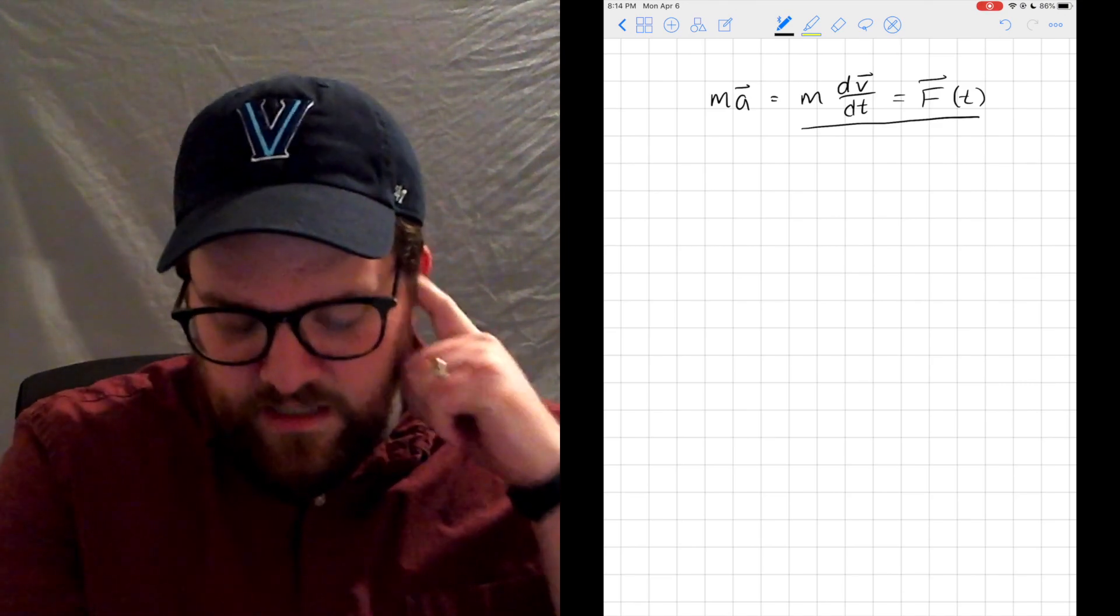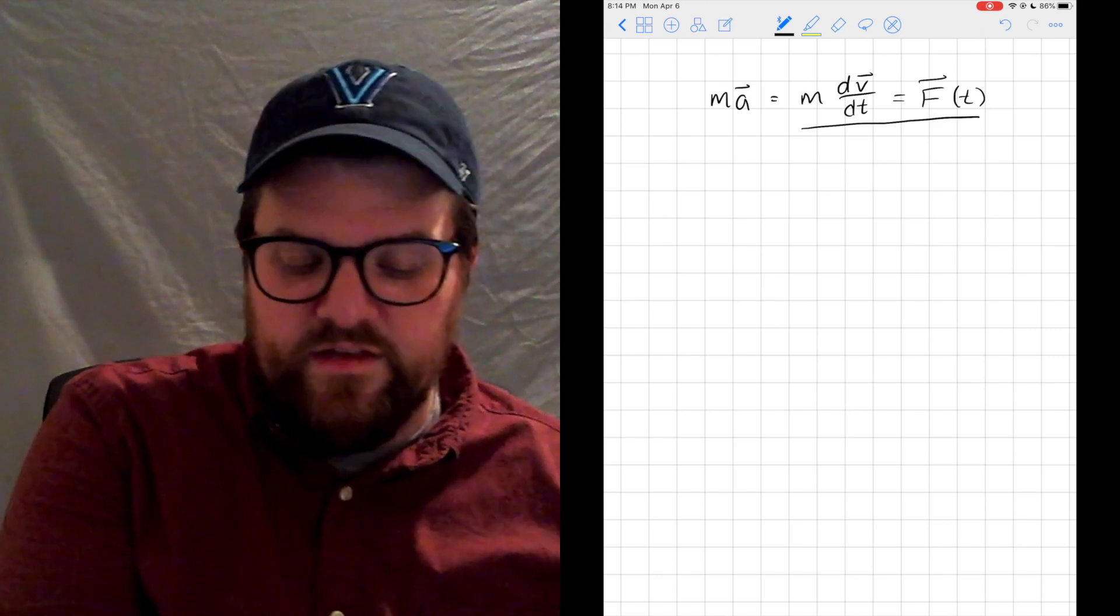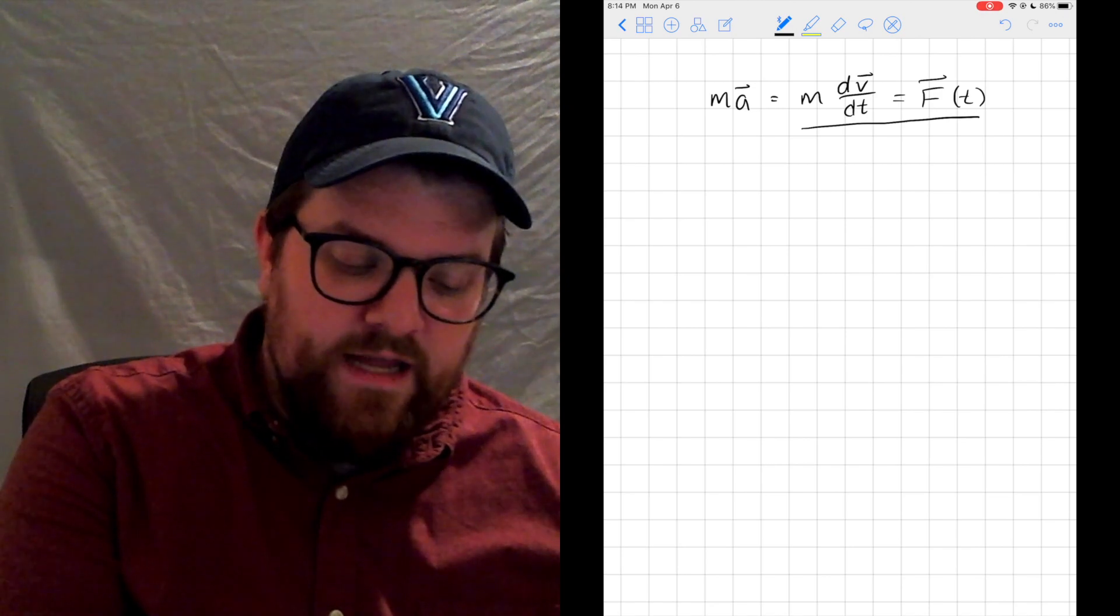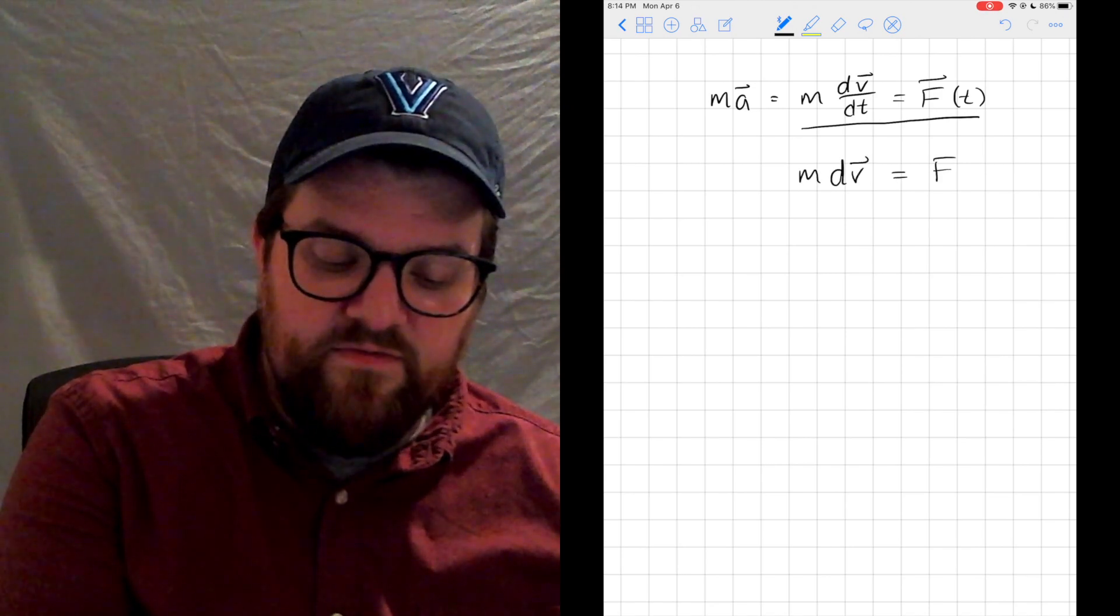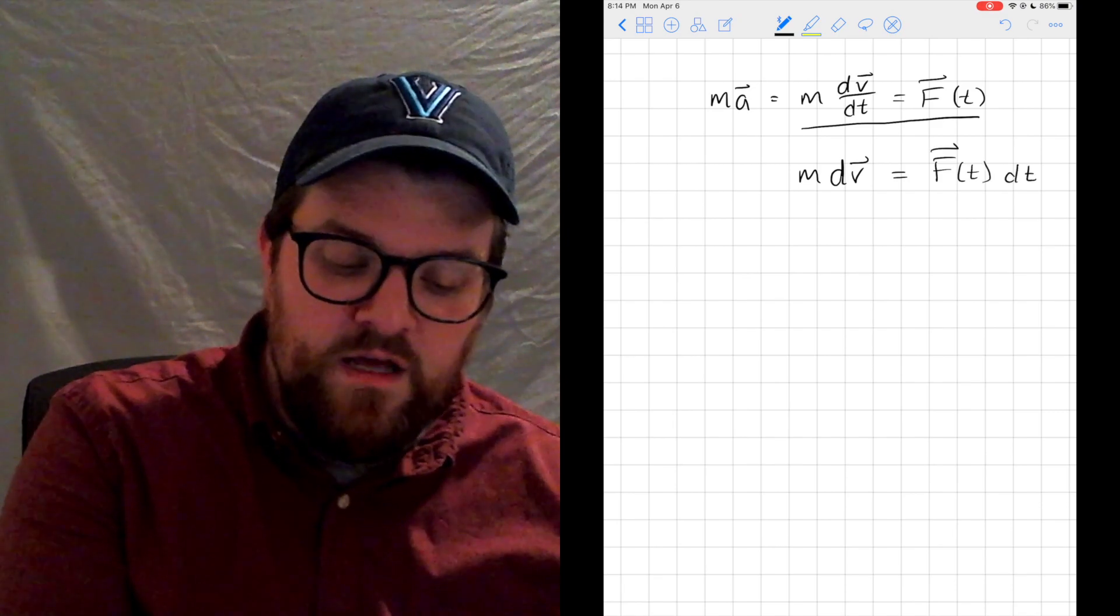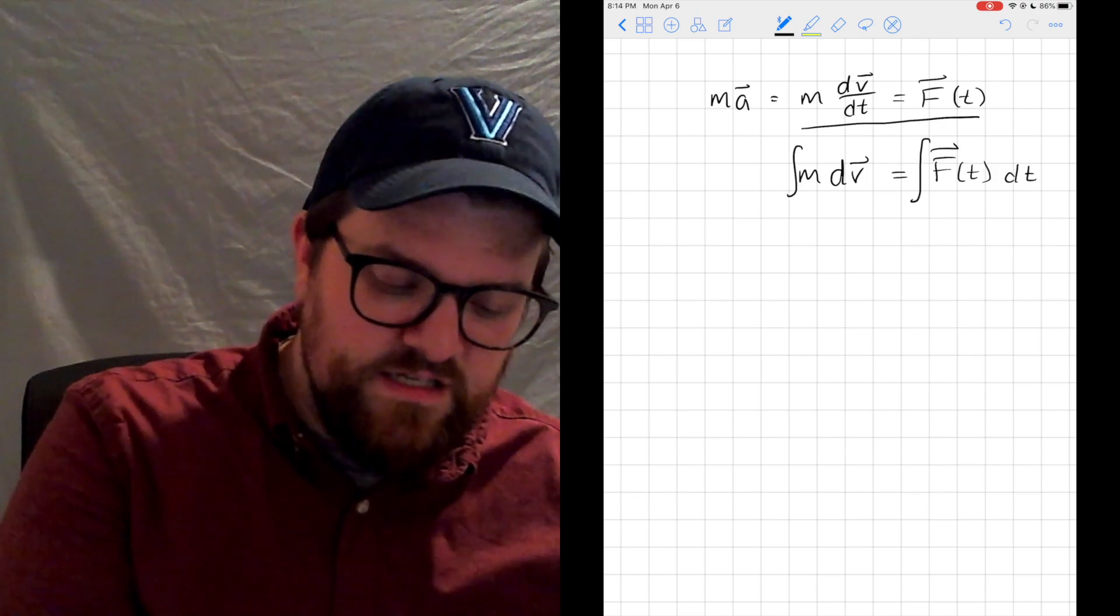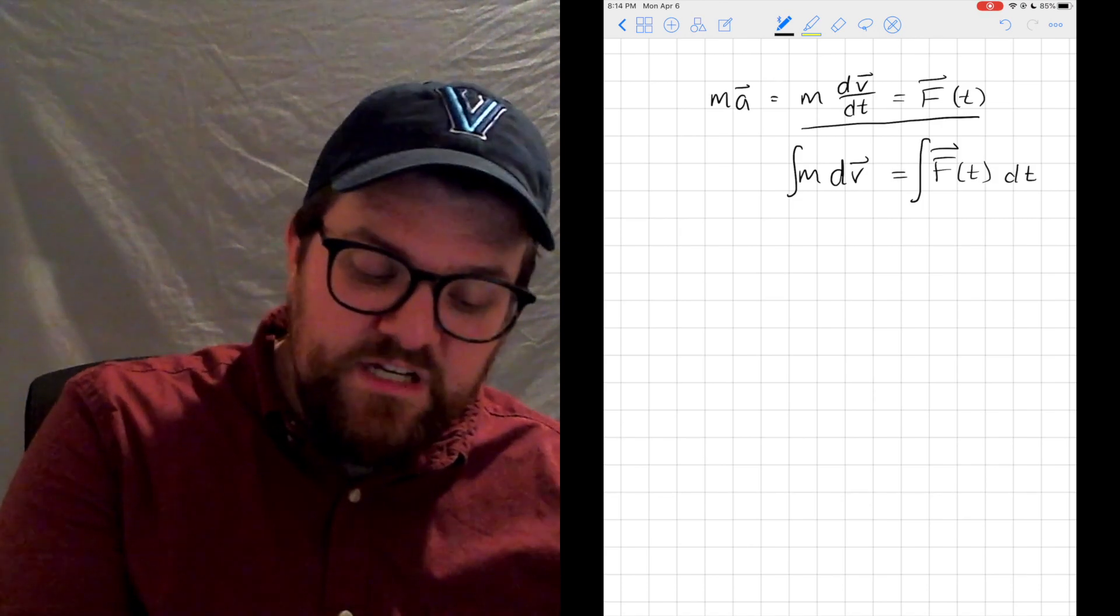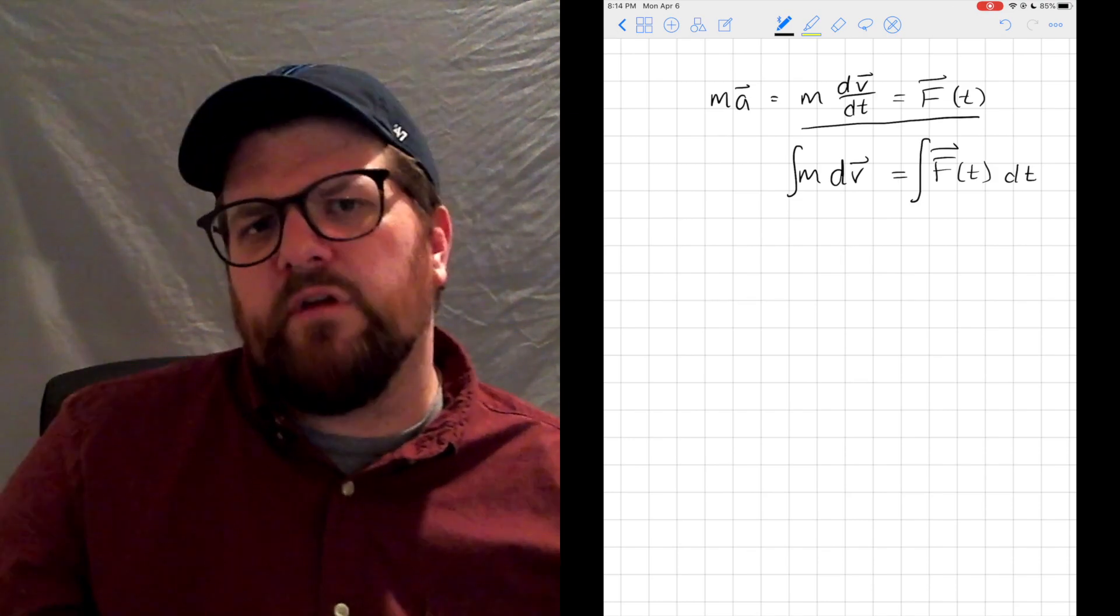But this is a good jumping off place. Let's focus on these two expressions here. If I break this dv/dt apart and actually throw dt on the other side, I can say m*dv equals F(t) times dt. And it's only a short jump to say, well, what if we integrate both sides?